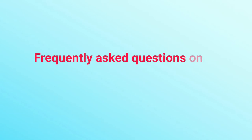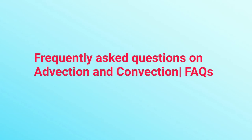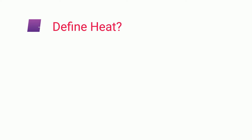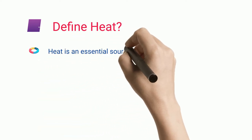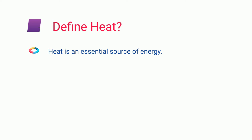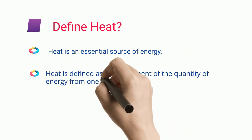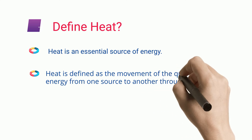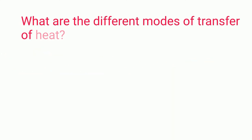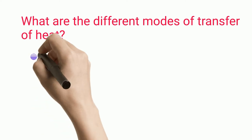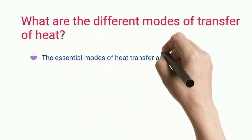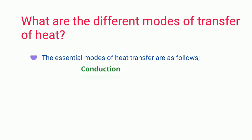Frequently Asked Questions (FAQs) on advection and convection. Define heat: Heat is an essential source of energy, defined as the movement of a quantity of energy from one source to another through various processes. What are the different modes of transfer of heat? The essential modes of heat transfer are: conduction, convection, radiation, and advection.